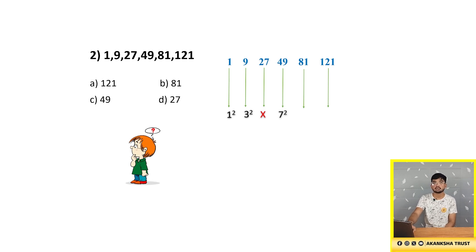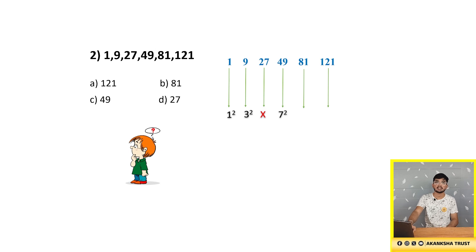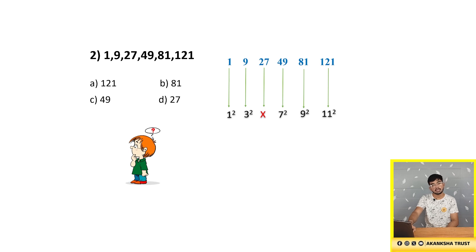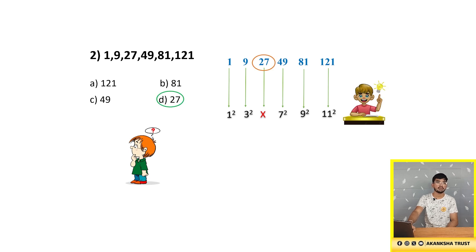The fourth term is the square of the fourth odd number: 1, 3, 5, 7 — so 7 squared is 49, which is correct. The next odd number is 9, and 9 squared is 81, which follows the sequence. The last number is 121, which is 11 squared. So 27 is the wrong number, because 5 squared is 25. The answer is option D, which is 27.